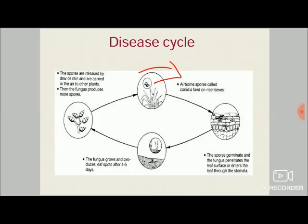After that, the fungus grows and produces leaf spots after four to five days. Leaf blast is the first symptom; then other symptoms — neck blast, neck rot, collar blast — occur. The fungus then produces airborne conidia; the spores are released by dew or rain and carried into the air to other plants. The spores that land on the leaf surface constitute primary infection, and the airborne spores affecting other plants constitute secondary infection. The fungus then produces more spores and more disease spreads through the whole field.